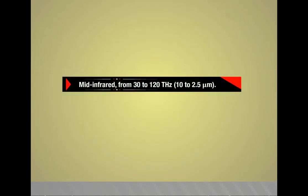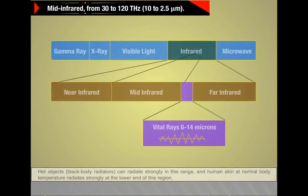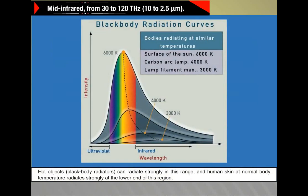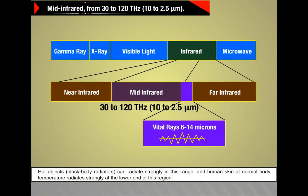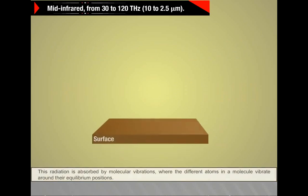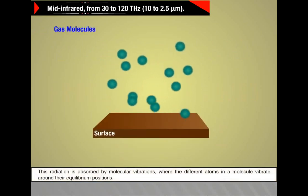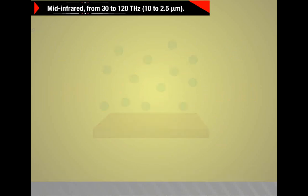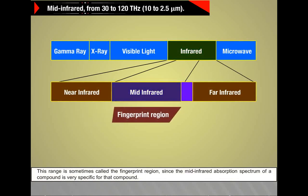Mid-infrared from 30 to 120 THz (10 to 2.5 micrometers). Hot objects, i.e. black body radiators, can radiate strongly in this range, and human skin at normal body temperature radiates strongly at the lower end of this region. This radiation is absorbed by molecular vibrations where the different atoms in a molecule vibrate around their equilibrium positions. This range is sometimes called the fingerprint region since the mid-infrared absorption spectrum of a compound is very specific for the compound.